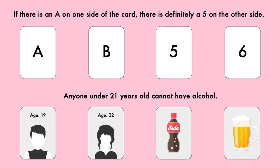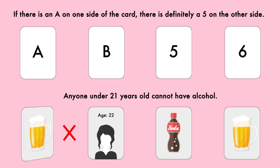You have to flip over the A card because if the other side is a 5, the rule is not broken. If it's anything else though, then the rule is broken. Just like with the 19-year-old, what they're drinking will decide whether the law is being broken or not.